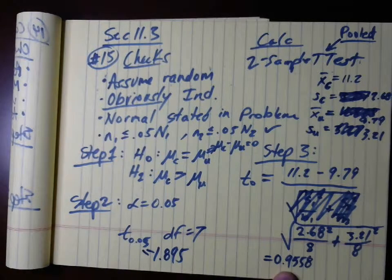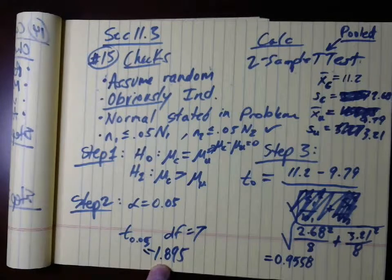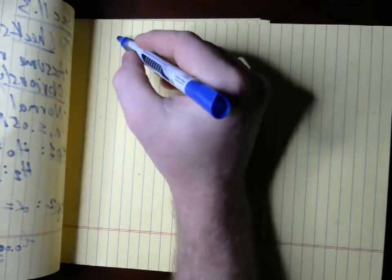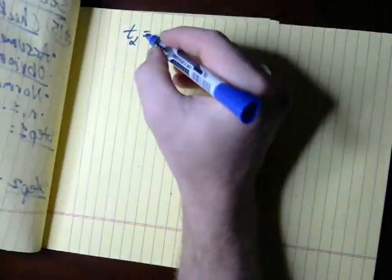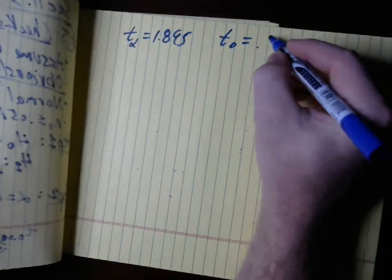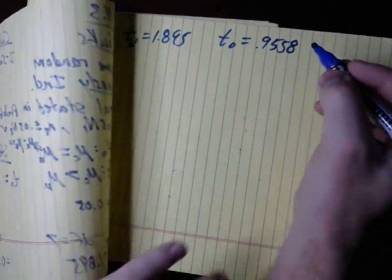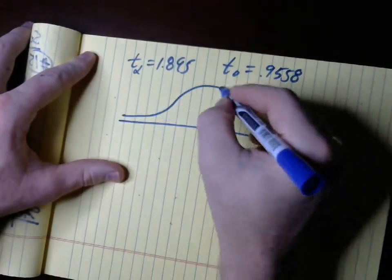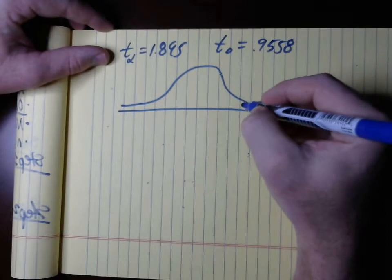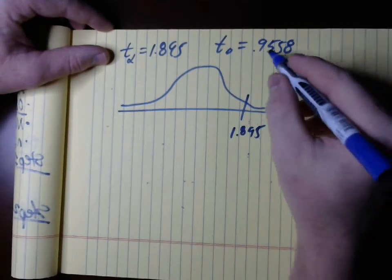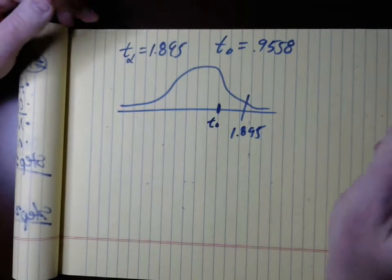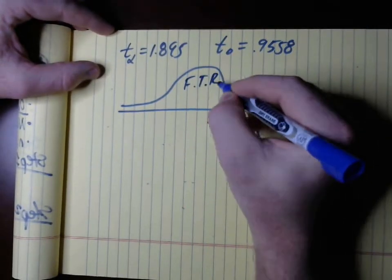Comparing the test statistic to the critical value: T_alpha = 1.895 and T-naught = 0.9558. The critical value is at 1.895 on the right tail, and the test statistic at 0.9558 is toward the middle. So T-naught falls in the fail-to-reject H₀ region.